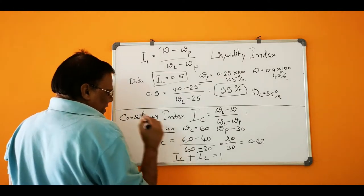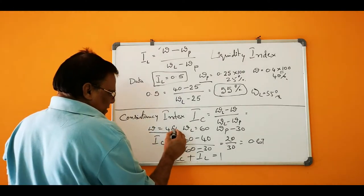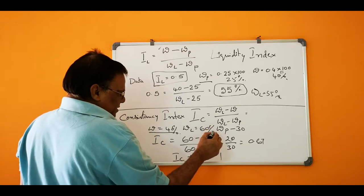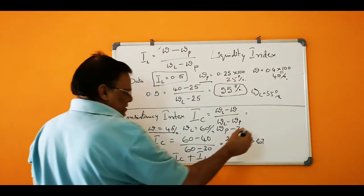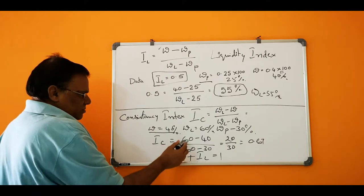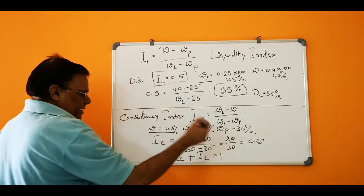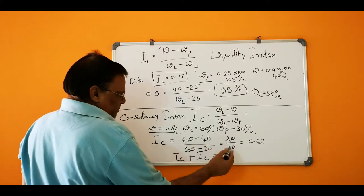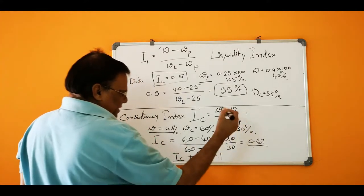So natural water content is 40%, liquid limit is 60%, and plastic limit is 30%. So IC equals 60 minus 40 divided by 60 minus 30. So IC will be 20 divided by 30, which equals 0.67.